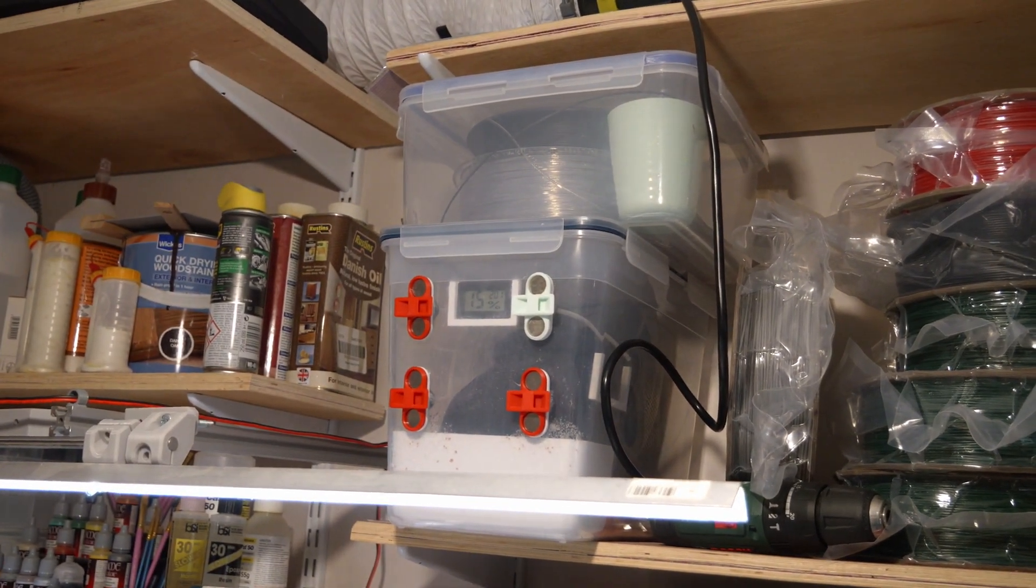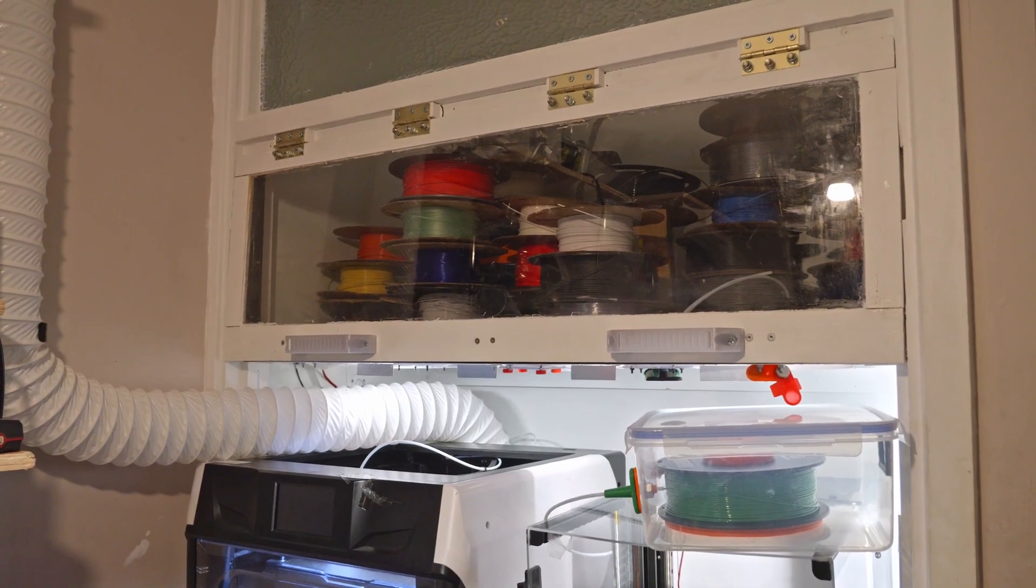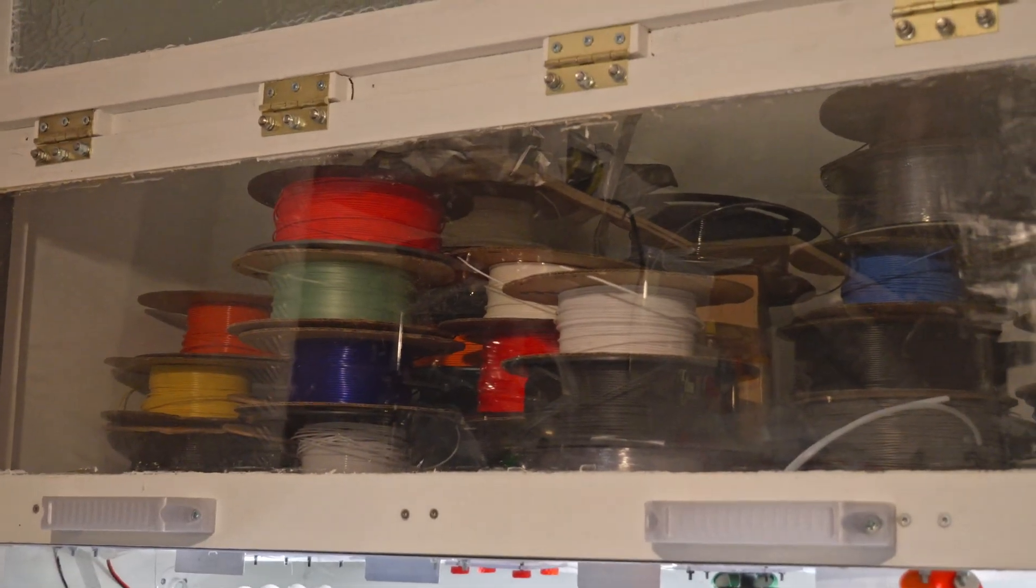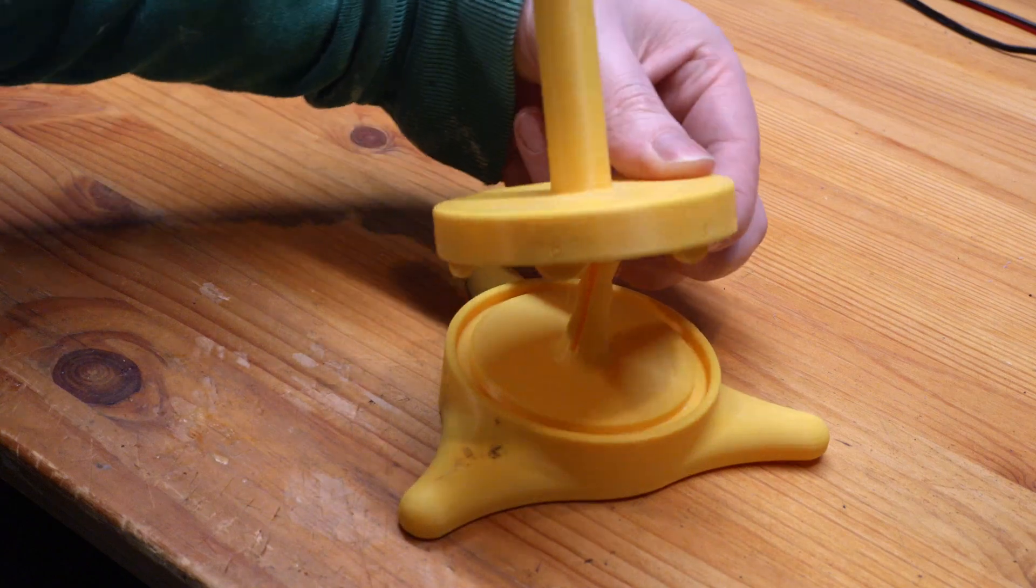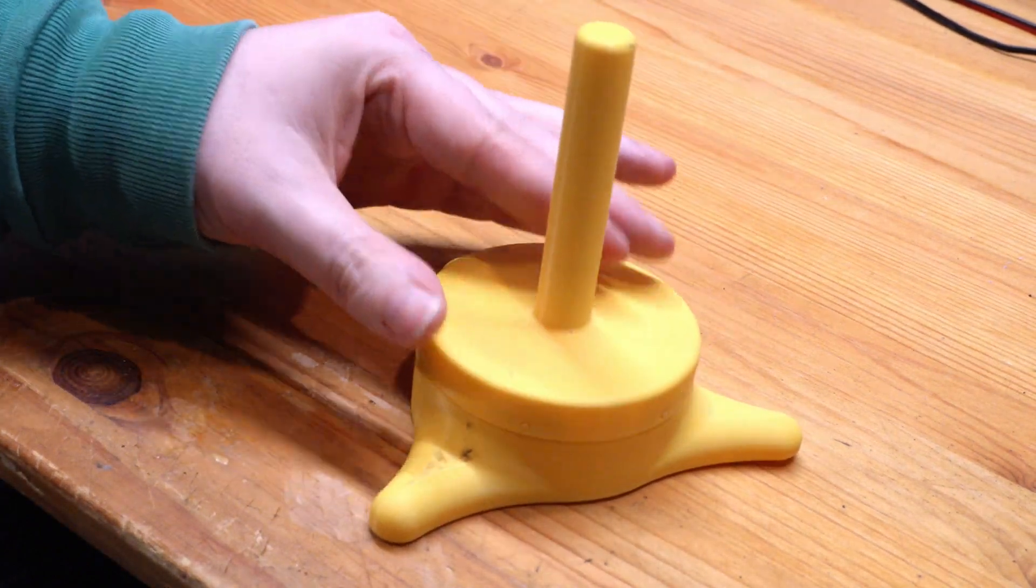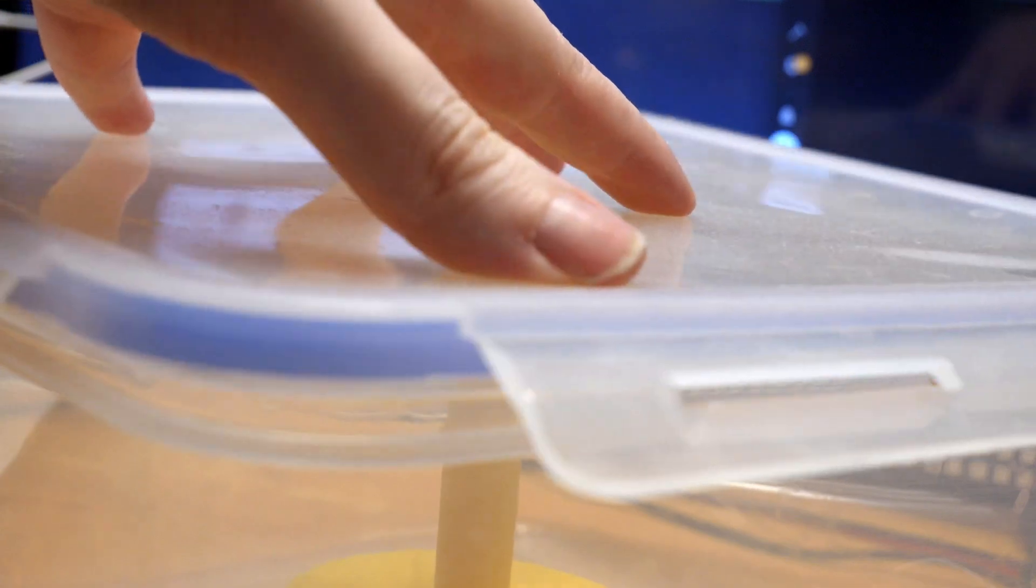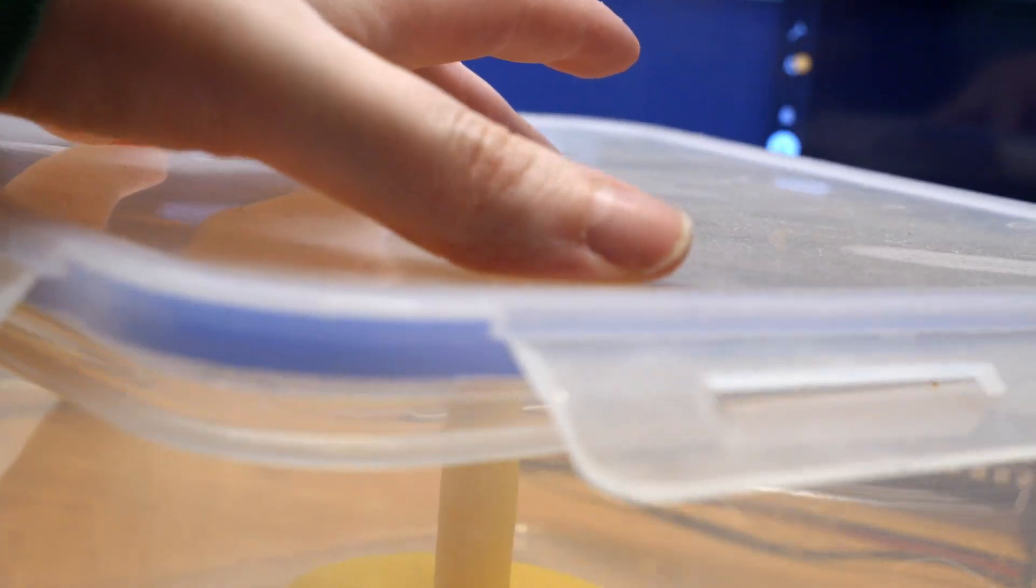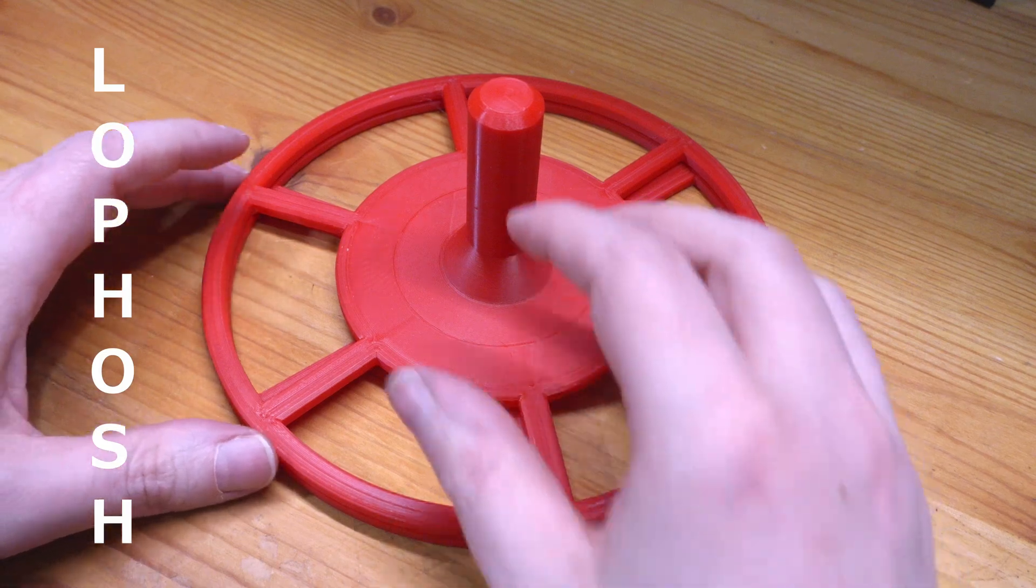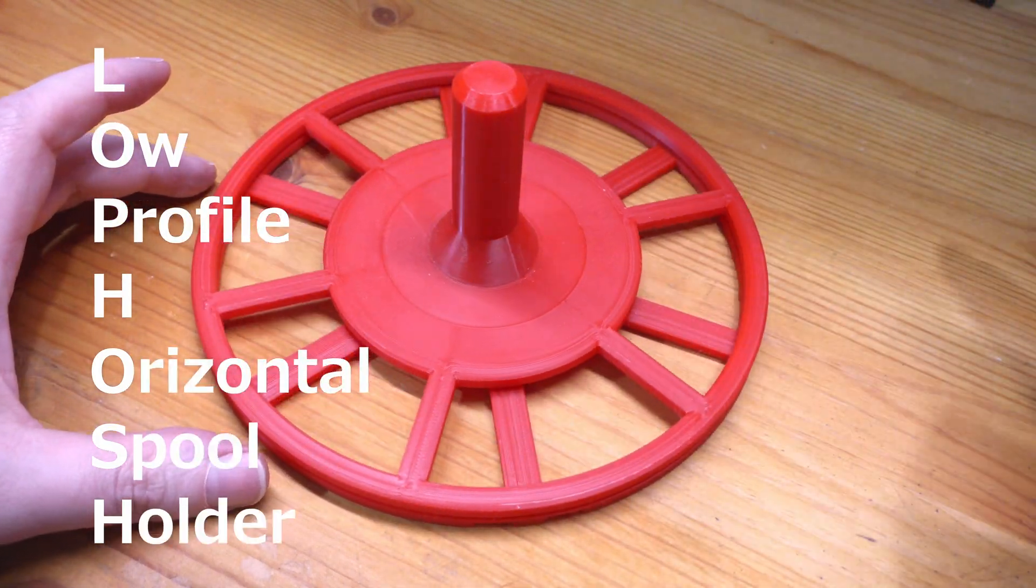I've got several dry boxes, and a whole cupboard too, that I can pipe filament from. Quite a few of the boxes I got some time ago are best suited for horizontally held spools, and this spool holder by CT3D, designers of the Benchy, that I printed years ago is too tall for these containers. I can't even find the model files online anymore. So I made LOPHOSH, the low profile horizontal spool holder.